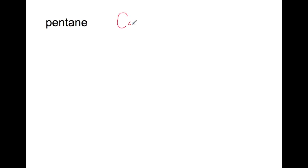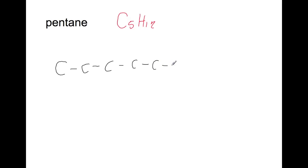For all of the organic families you've looked at so far, you should be able to know their molecular formula, use that to draw the full structural formula, and the shortened structural formula. So the molecular formula for pentane is C5H12. We're going to draw the full structural formula for pentane, where all bonds are shown between all of the carbons and all of the hydrogens.